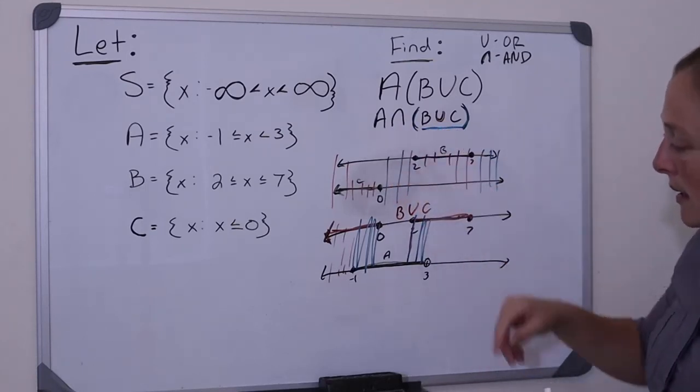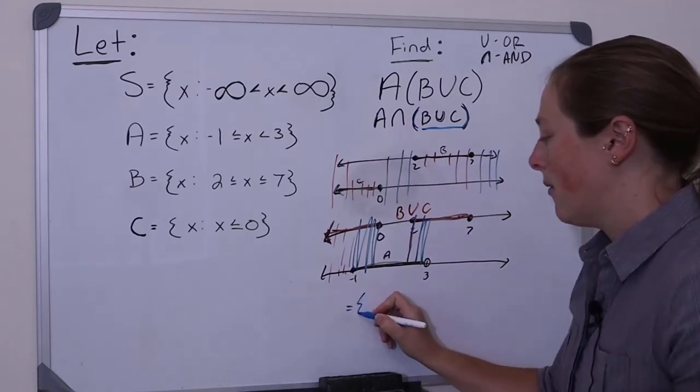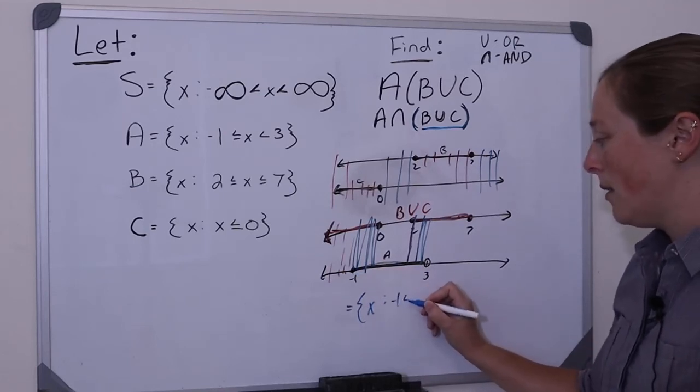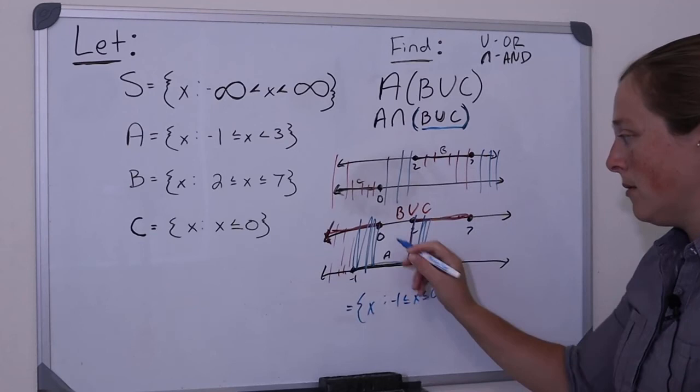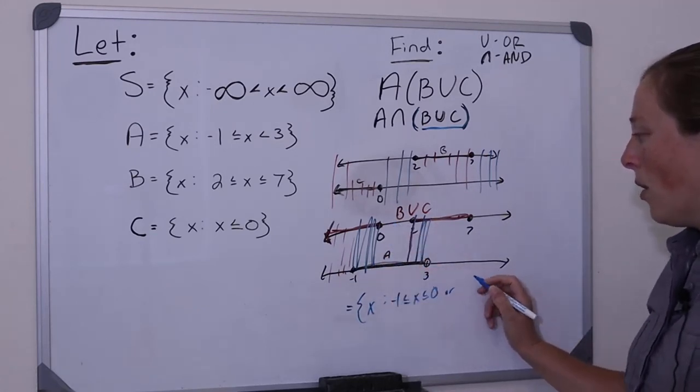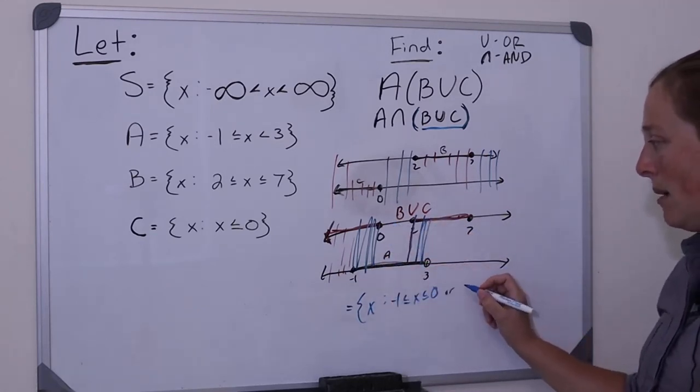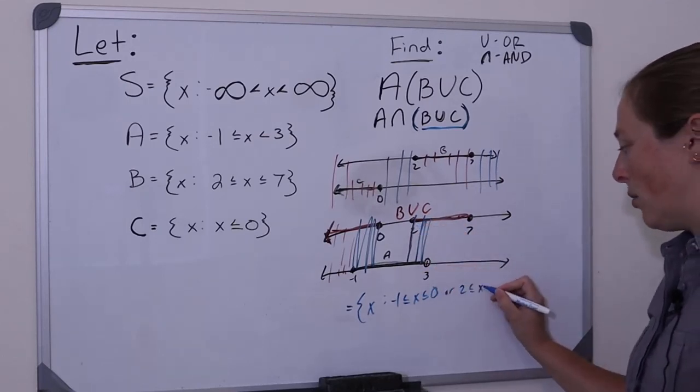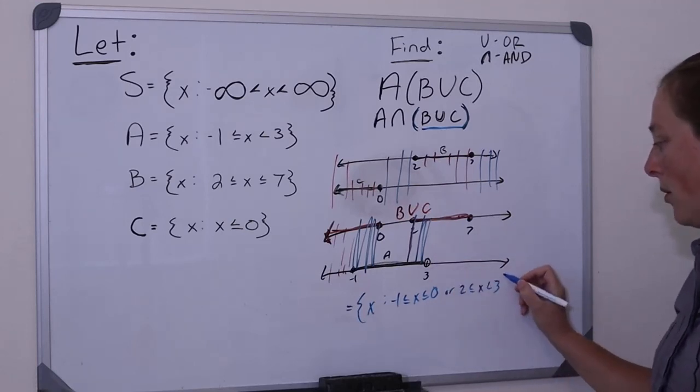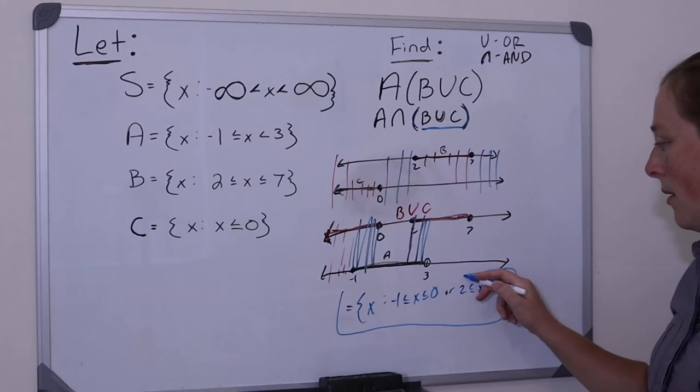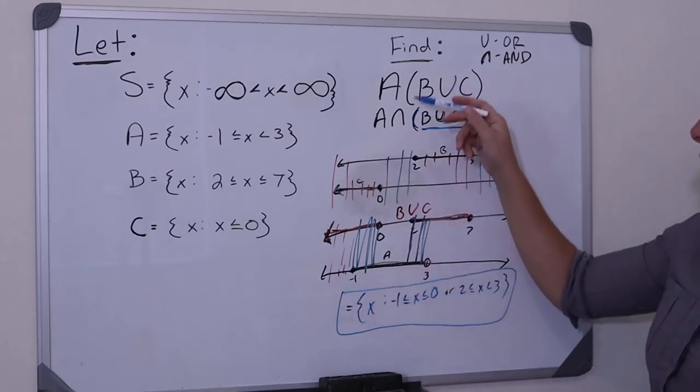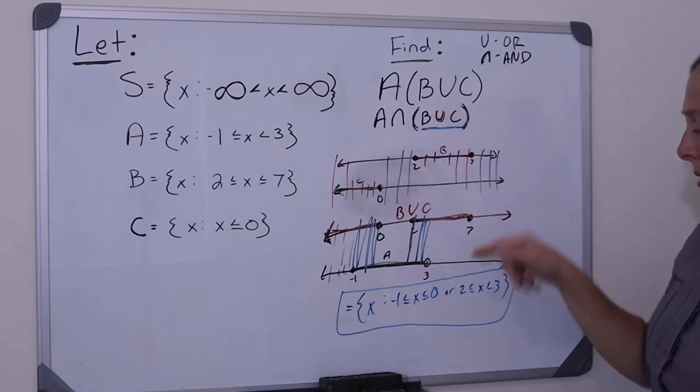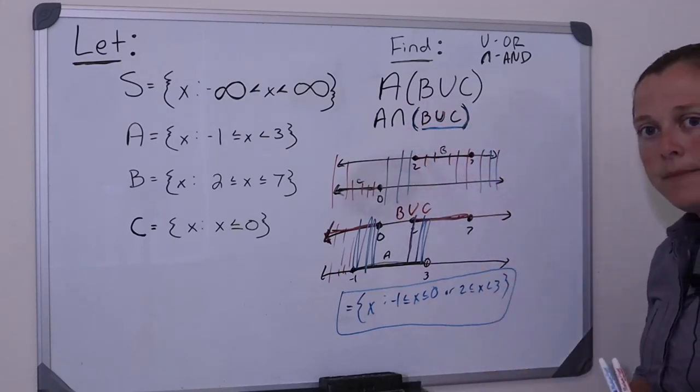So where is this intersection? This intersection, it is here. It is here. So I'm between negative 1, including negative 1, and including 0. Between negative 1 and 0. Or, X can be between 2, including 2, until I get to 3, but not including 3, because it's just that open circle there. So this is where my intersection would be. So this would be where A intersect B union C would be. And look at that for me. Let's go ahead and show the right spot. That's pretty good.